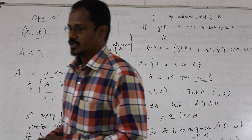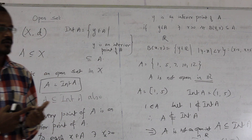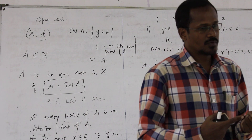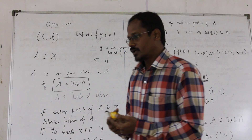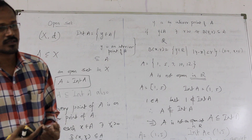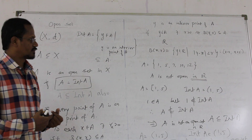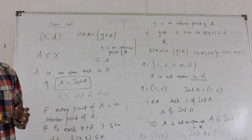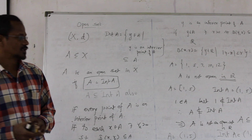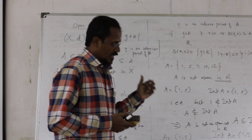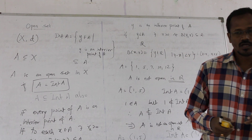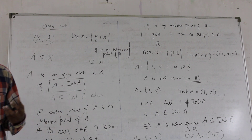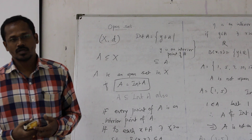This is the fundamental framework in metric space: the open ball, the interior, and the open set. Wherever you go in the concept of metric space, when you define something, it is framed in terms of an open ball, an open set, or an interior. These three concepts play a vital role in learning any concept of metric space. In the forthcoming videos, we are going to look at what properties the open sets satisfy.